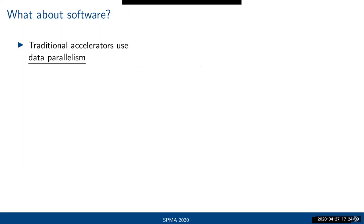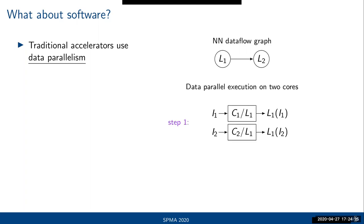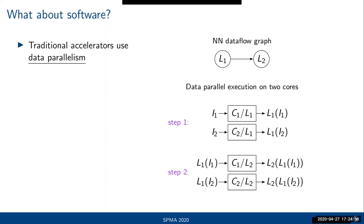The reason is that traditional accelerators use data parallelism. To give a simple example: if you have a neural network with just two layers and want to map it onto a two-core accelerator, the data-parallel execution will split the input, execute the first layer on two cores, get the results, and then execute the second layer on those results.